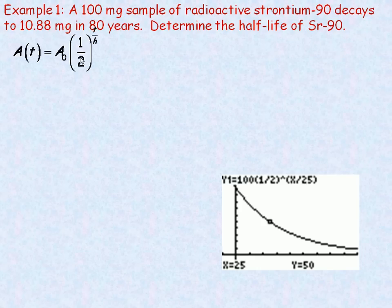So we'll start with our formula, A(t) equals A₀ times one-half to the t over h. And that's the same formula from the last page. We're going to fill in the values we're given.